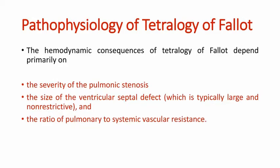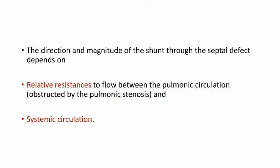Coming to the pathophysiology of Tetralogy of Fallot: the hemodynamic consequences depend primarily on the severity of pulmonic stenosis, the size of the ventricular septal defect, and the ratio of pulmonary to systemic vascular resistance. The direction and magnitude of the shunt through the septal defect depends on relative resistances to flow between the pulmonic circulation and the systemic circulation.